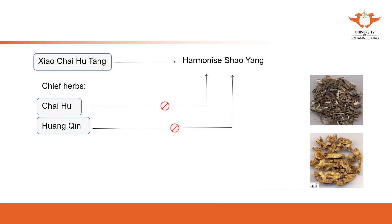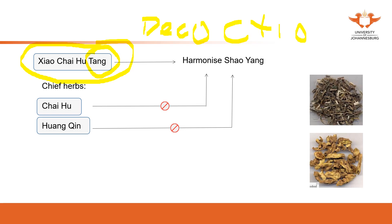Another example: a formula called Xiao Chai Hu Tang. This is our first time to see the term 'Tang.' Tang is a Chinese pronunciation meaning decoction. A decoction is the herbal medicine that you cook together — it is one of the most common dosage forms used in Chinese herbal medicine. We put a group of herbs from the formula or prescription, cook them, concentrate the liquid, and that gives us Xiao Chai Hu Tang.